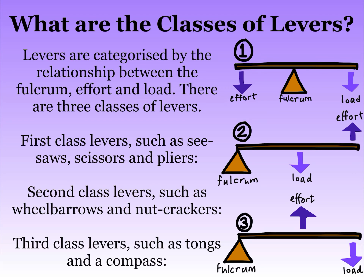Levers are categorized by the relationship between the fulcrum, effort and load. There are three different classes of levers. First class levers such as seesaws, scissors and pliers. Second class levers such as wheelbarrows and nutcrackers. And third class levers such as tongs and a compass.